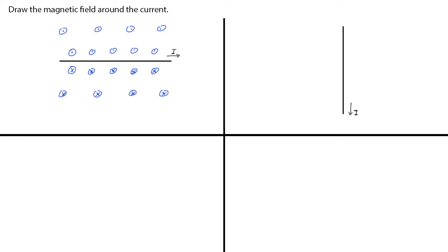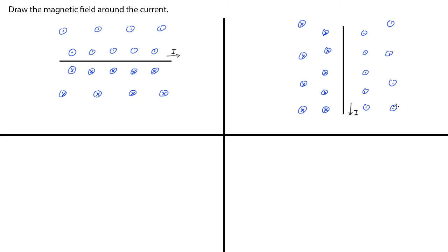In this case, we have the current going down. The magnetic field would go into the screen on the left hand side of the current, and will come out of the screen on the right hand side of the current. So we do the same thing as before — using dots to represent out of the screen and crosses to represent into the screen. And the density of field lines is the same as before as well.